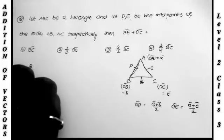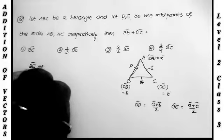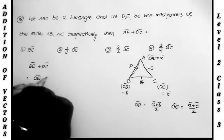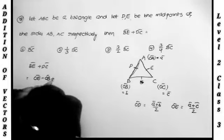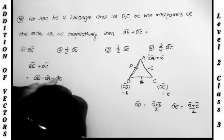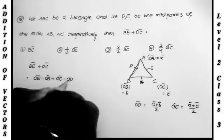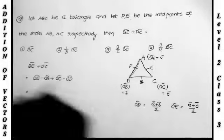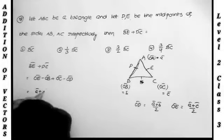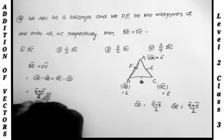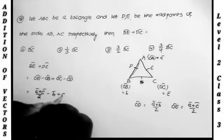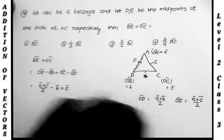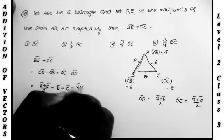We want the value of BE bar plus DC bar. BE bar equals OE bar minus OB bar, and DC bar equals OC bar minus OD bar. Substituting: OE bar is A bar plus C bar by 2, minus OB bar which is B bar. OC bar is C bar, and OD bar is A bar plus B bar by 2.